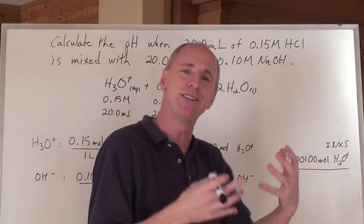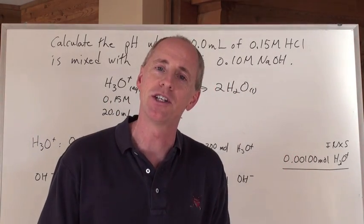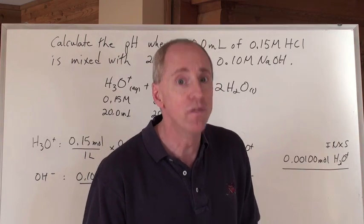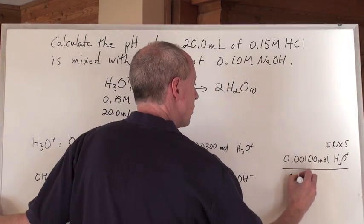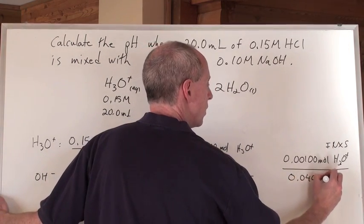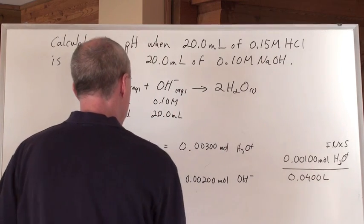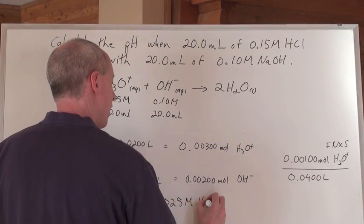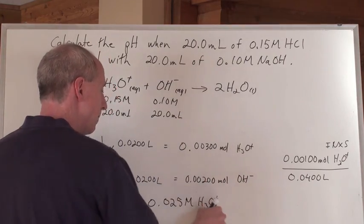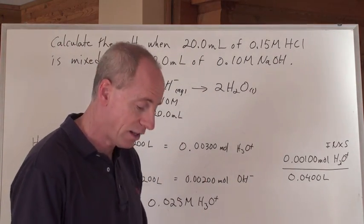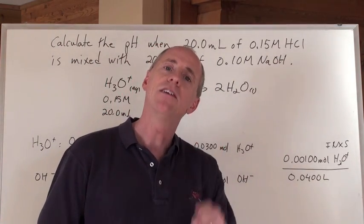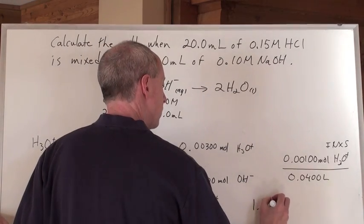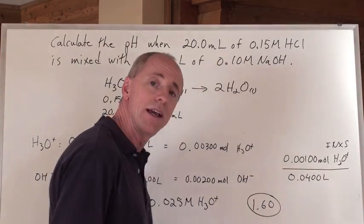Yeah, because when you mix the two solutions together, the new concentration is going to be arrived at by dividing by the new volume, which is 0.0400 liters. When you do that math right there, you get 0.025 moles per liter of hydronium, or HCl, that is in excess. To find the pH of that, take the negative of the log of the concentration of the hydronium, and you get 1.60, and that's the answer.